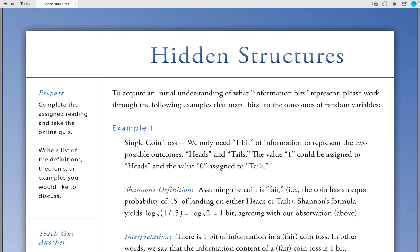Example 1: Single coin toss. We only need one bit of information to represent the two possible outcomes of heads and tails. The value 1 could be assigned to heads and the value 0 could be assigned to tails. Shannon's definition: Assuming the coin is fair, that is, the coin has an equal probability of 0.5 of landing on either heads or tails, Shannon's formula yields log base 2 of 1 divided by 0.5 is equal to log base 2 of 2, which is equal to 1 bit, agreeing with our observation above.